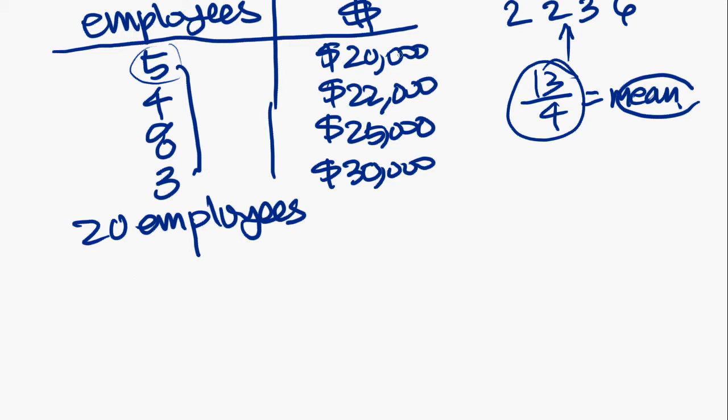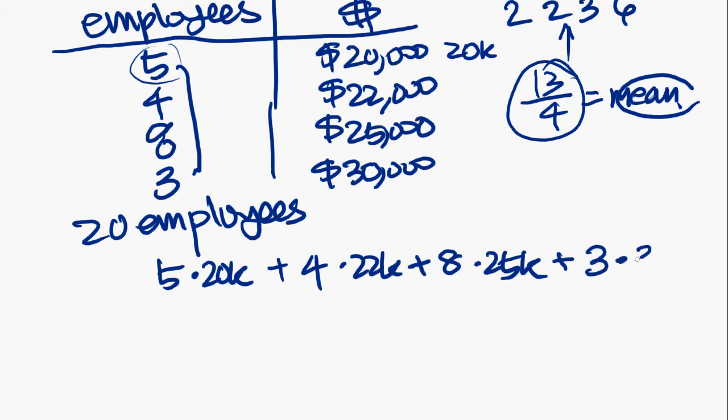The other thing you notice is that 20 with 3 zeros at the end, you can kind of shorten that to 20K. You don't want to write the zeros out every single time. Call it 20K and it makes it easier to actually do the calculations. So, let's set up the equation. You have 5 employees making 20K. Then you got 4 employees making 22K. And you have 8 employees making 25K. And you have 3 employees making 30K. All of these poor underpaid souls. Alright. And all over 20.